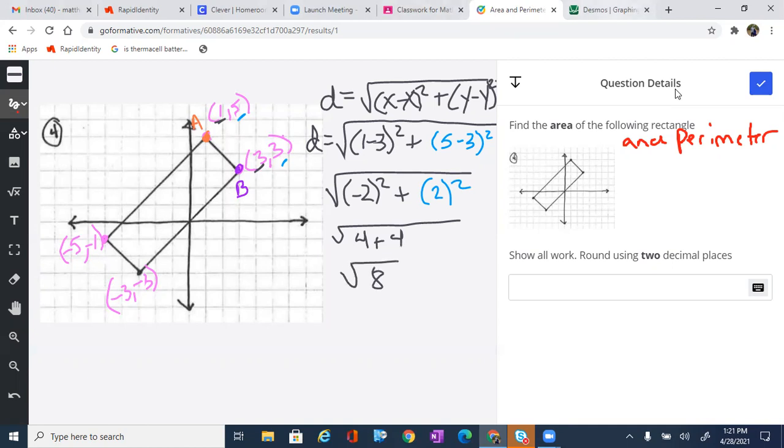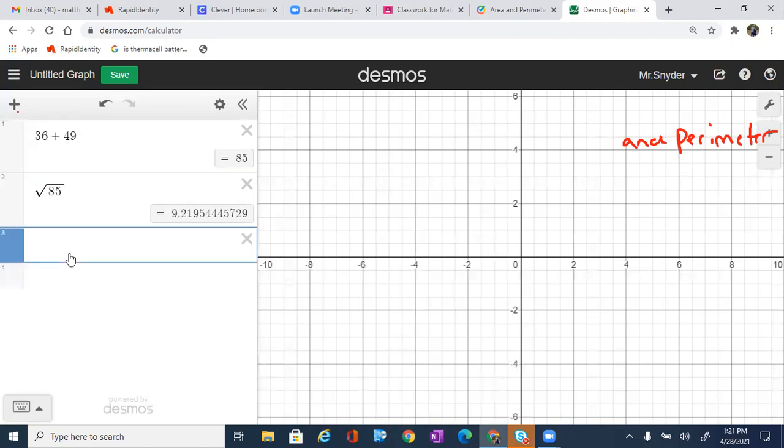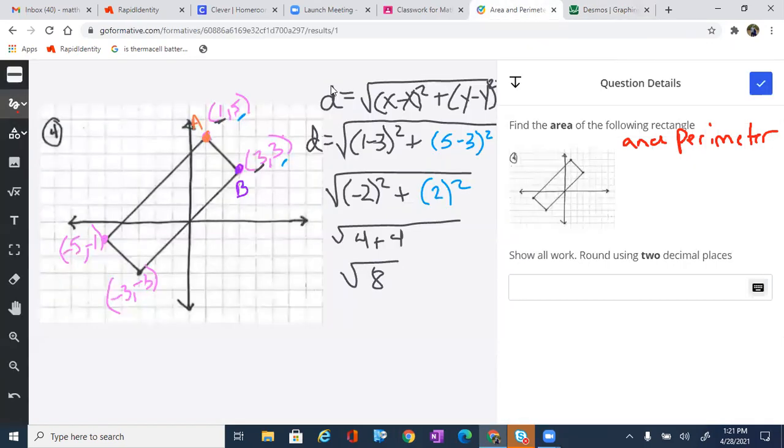When we do this, we can come over to Desmos and just type in, what is the square root of 8? Type that in and we get 2.828 or 2.83. So this is going to be 2.83, which also means that this over here is 2.83.